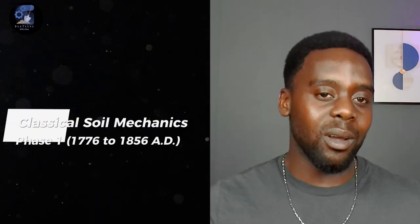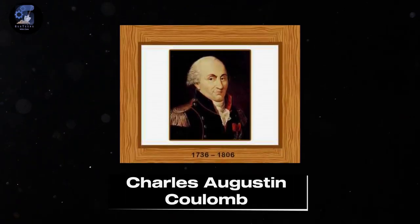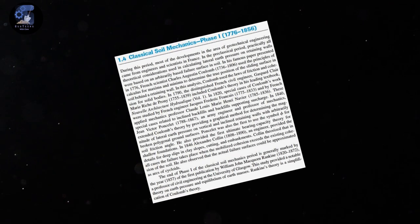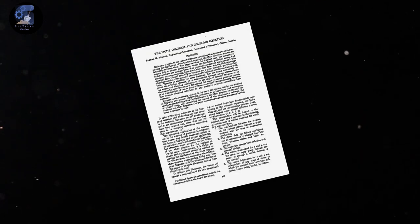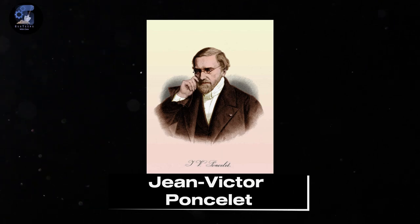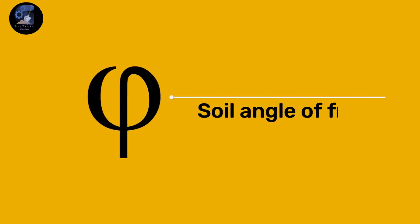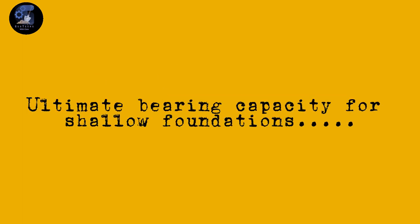As time passed, most scientists and engineers were catching up on the importance of soil mechanics studies. Classical soil mechanics phase one brought about some of the most important figures in soil engineering. In his famous paper presented in 1776, French scientist Charles Augustin Coulomb used the principles of calculus to determine the true position of the sliding surface of soil behind a retaining wall, using the laws of friction and cohesion of solid bodies. Jean-Victor Poncelet, an army engineer and professor of mechanics, extended Coulomb's theory by providing a graphical method for determining the magnitude of lateral earth pressure on vertical and inclined retaining walls. Poncelet was also the first to use the symbol phi (φ) for soil friction angle, and developed the first ultimate bearing capacity theory for shallow foundations.